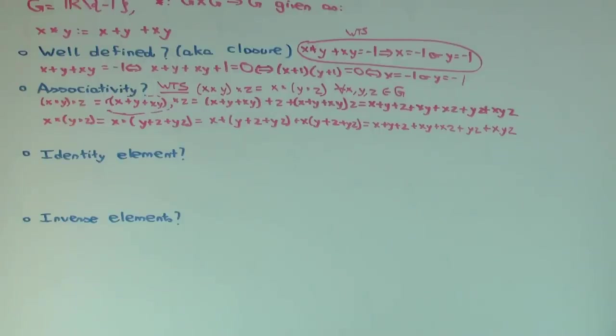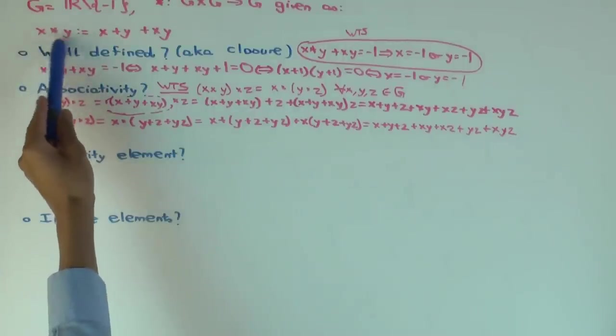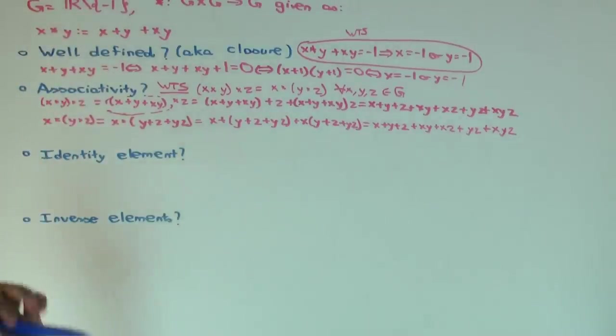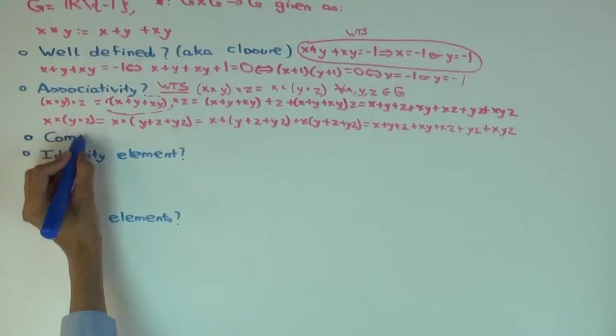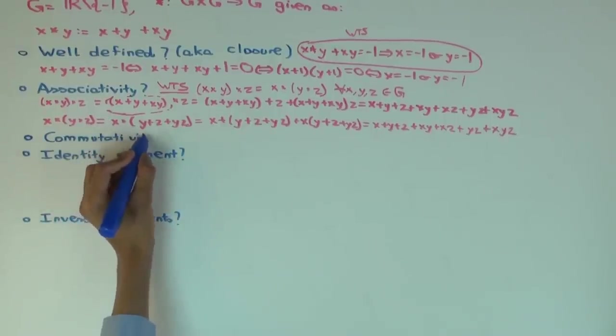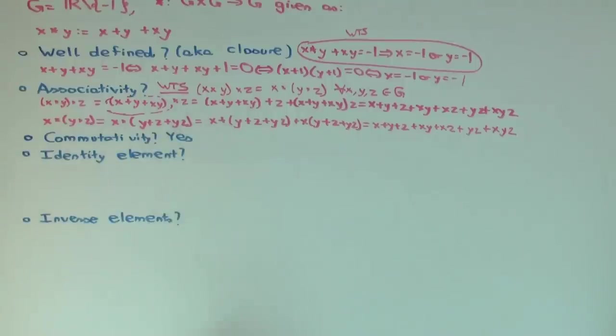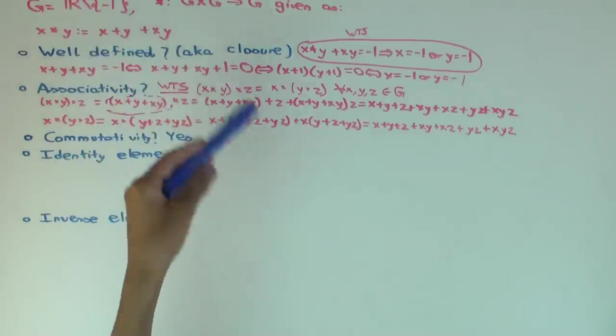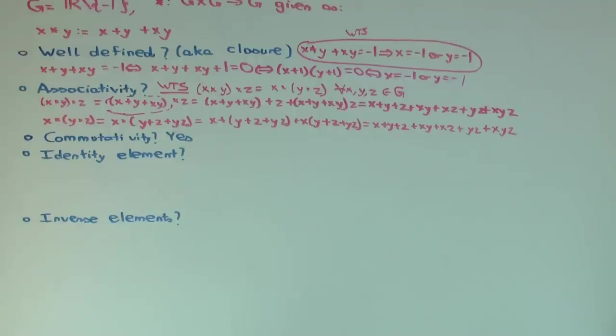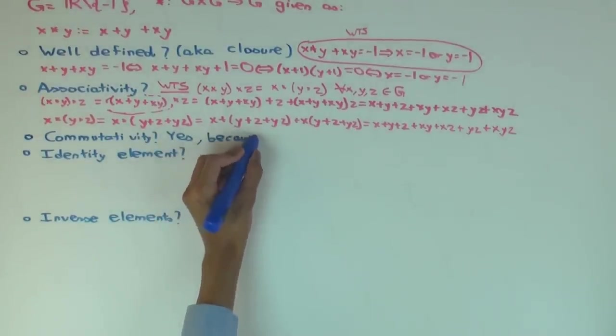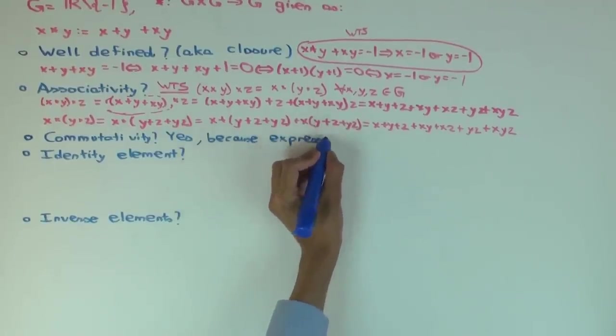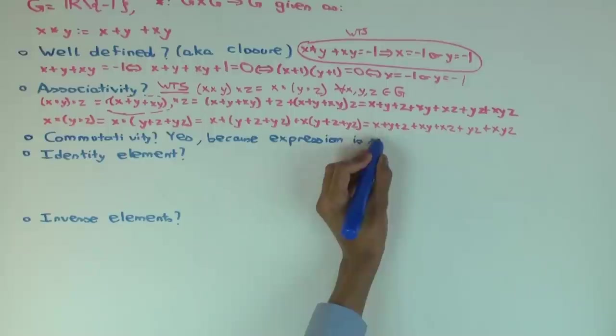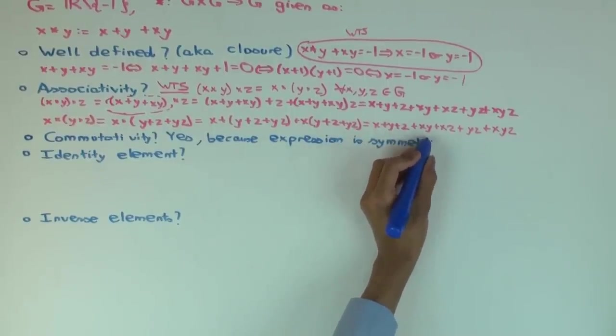Now, before we go on to identity element, let's make a bonus observation, which will help you save a little bit of effort here. What's the additional way in which this operation is nice? It's symmetric, so it's commutative. Because expression is symmetric in x and y. So now to find identity and inverses, we just need to find one-sided identities and one-sided inverses.